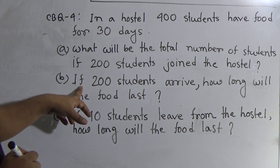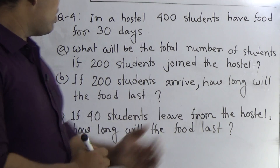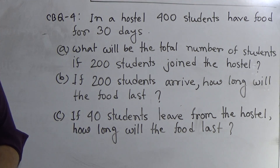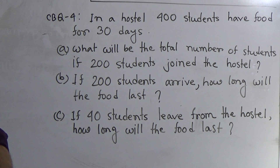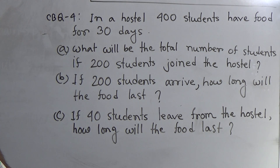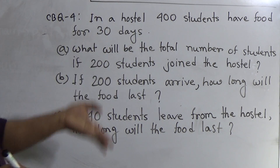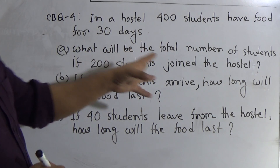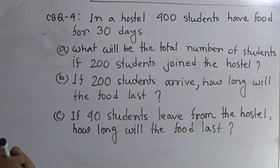Next, question number B: if 200 students arrive, how long will the food last? First we find out the total number of students after arriving 200 students in that hostel. It will be 600. Then we write: 400 students have food for 30 days, one student has how much, and 600 students have how much. By this way, you can solve question number B.